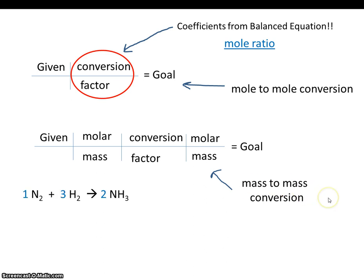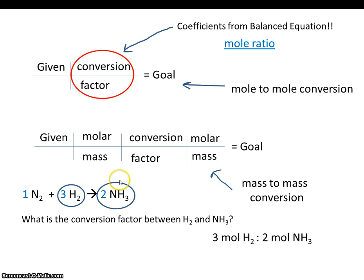Let's take a quick look at an example. One mole of nitrogen plus three moles of hydrogen makes two moles of ammonia. So let's ask a simple question: What is the conversion factor between H2 and NH3? Well, you can see right away that conversion factor will be three to two. Three moles of hydrogen for every two moles of ammonia.